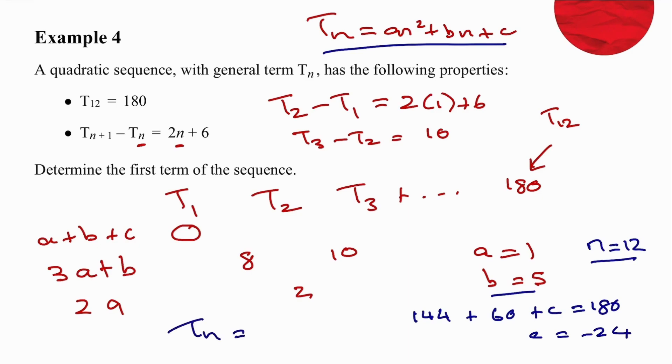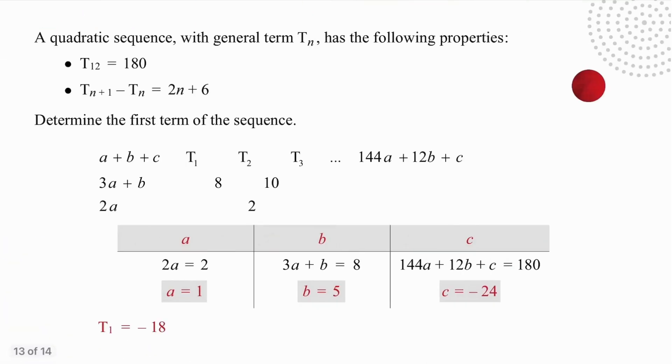So, we now know that the formula for this is TN equals N squared plus 5N minus 24. So, with that information, we can work out our first term value, because the first term will be 1 plus 5 minus 24, which will give us minus 18. That is very nicely written up. So, pause the video, make sure you understand everything, and when you get a question similar to this, hopefully, you will take it in your stride.